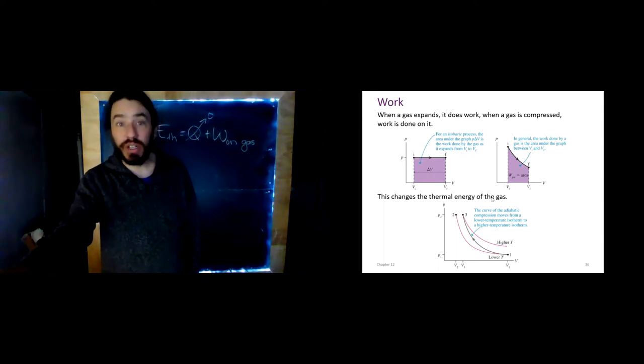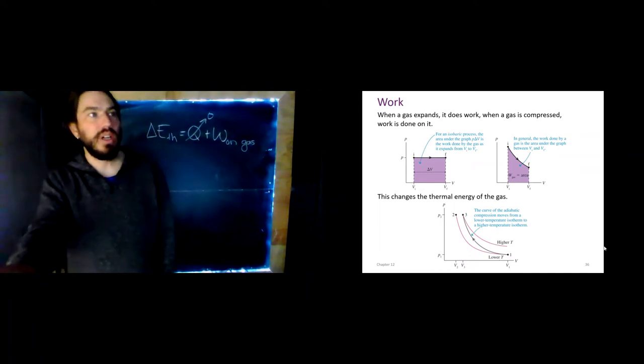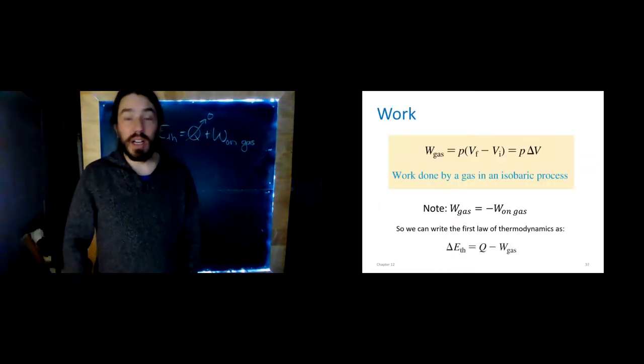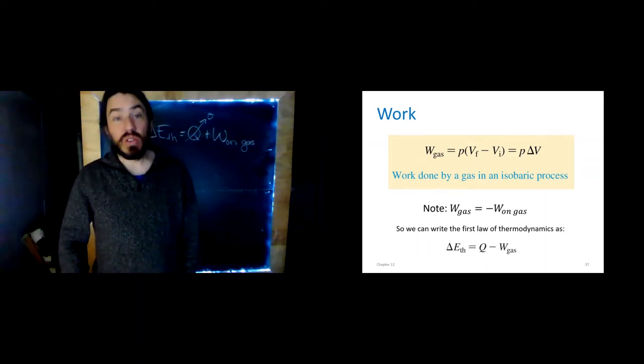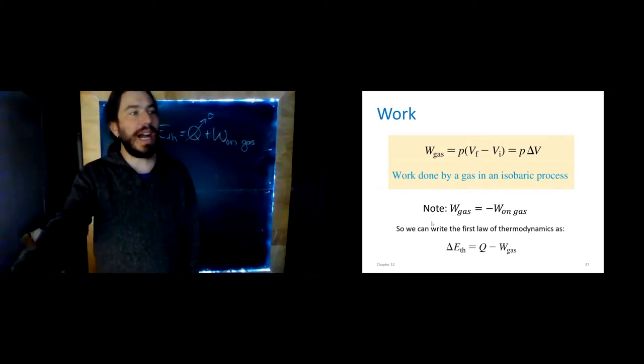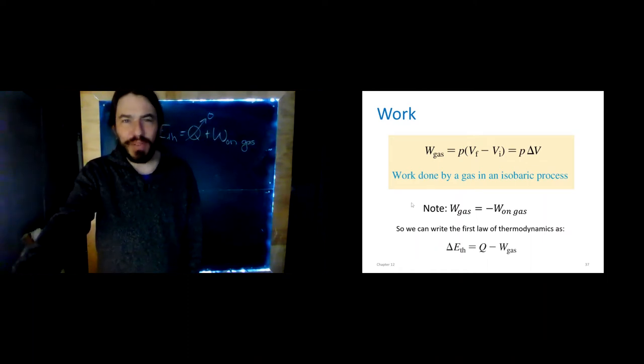This changes the thermal energy of the gas. So when I do work on the gas, I move from a lower isotherm to a higher isotherm. The temperature goes up. So in terms of equations, the work done by a gas is P times ΔV. So it's a pressure times a change in volume. And note this, that the work done by the gas is the opposite of the work done on the gas.